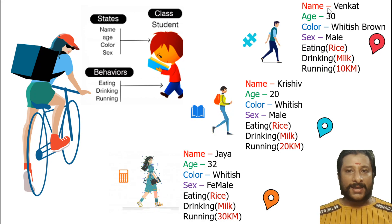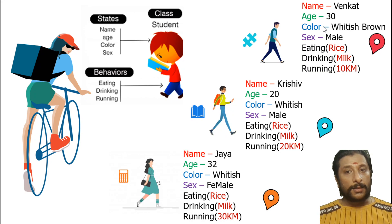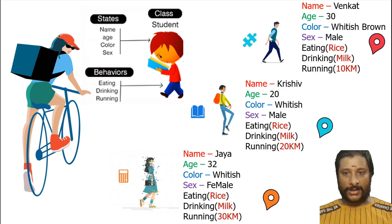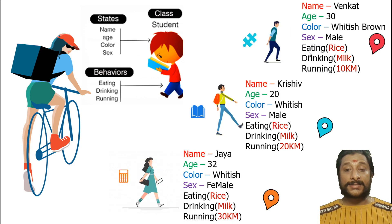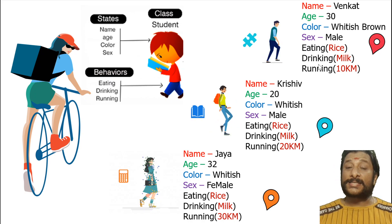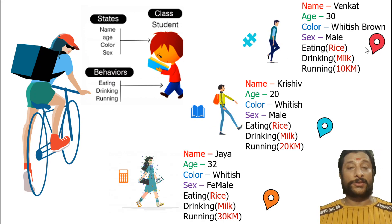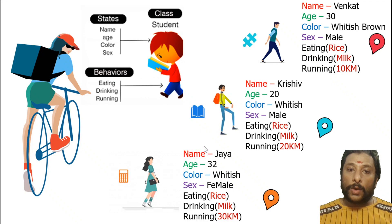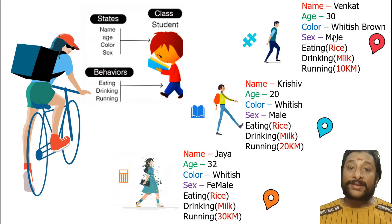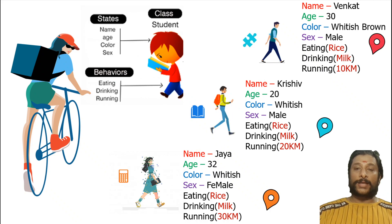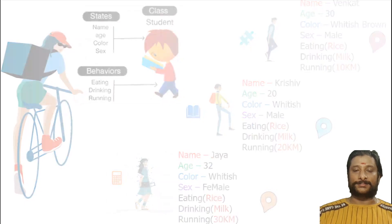You can see name, age, color, sex — this is how data is segregated across objects. Only one class is created but you are able to create many real-time objects. That is where the difference starts.